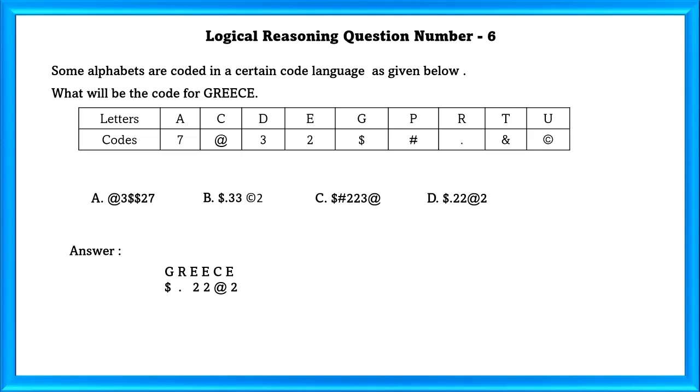Question Number 6: Some alphabets are coded in a certain language as given below. What will be the code for Greece? The code for Greece will be the answer D.